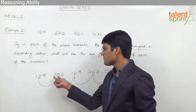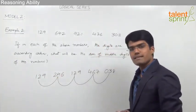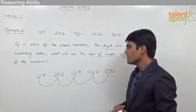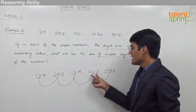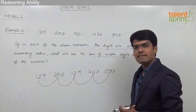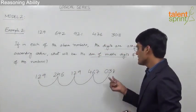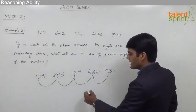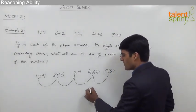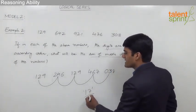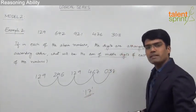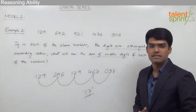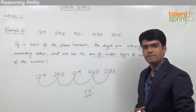Adding the middle digits: 2 plus 4 is 6, 6 plus 2 is 8, 8 plus 6 is 14, and 14 plus 3 is 17. So the sum of all the middle digits of these numbers, after the digits are arranged in ascending order, is 17.